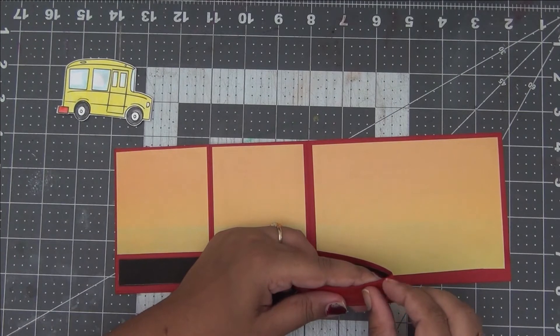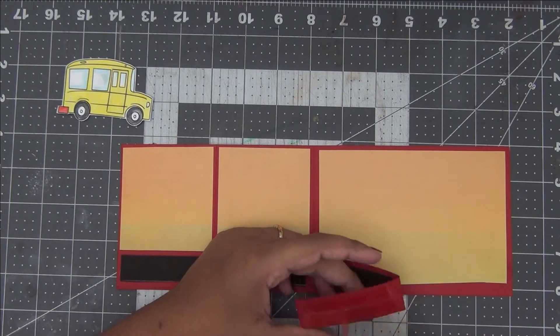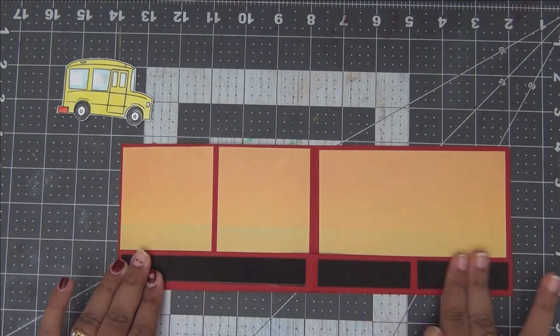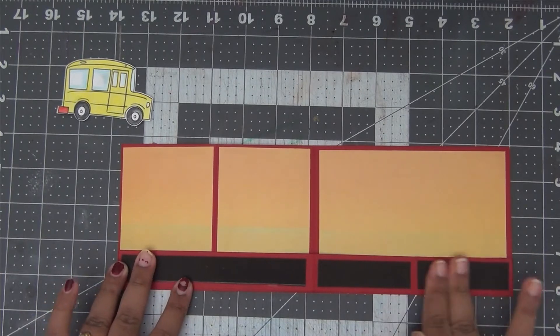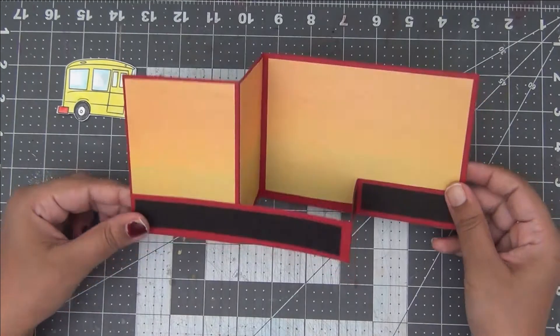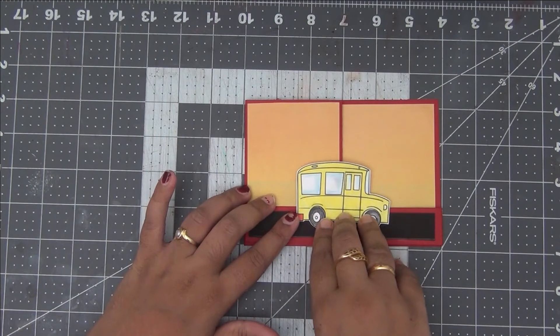So as you can see here, first I've added the 1 inch strip onto the left side and then I'm peeling up the red tacky tape and adhering it onto the right side, making sure all my edges and corners are aligned well. So as you can see here, our base card is completely done. All you have to do is decorate it further with whatever embellishments you like according to the theme of your card.